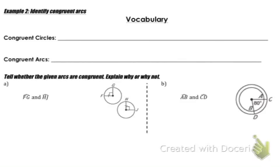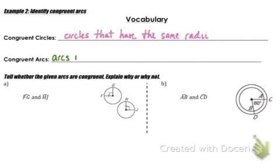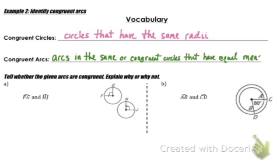A little bit more vocabulary: congruent circles are circles that have the same radii, and congruent arcs are arcs in the same or congruent circles that have equal measures. So congruent circles have the same radii, and congruent arcs are in the same congruent circle and have equal measures.